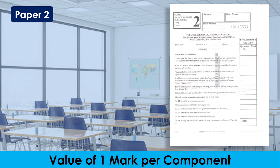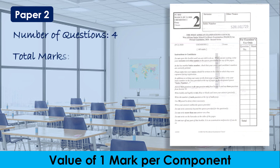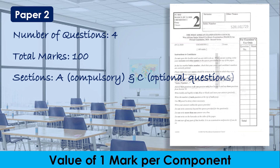The essay consists of four questions made up of 100 marks, with each question carrying 25 marks. The paper has two sections: Section A and Section C for Nigerian, Sierra Leonean, and Liberian candidates — Section A is compulsory while you're expected to answer only three out of four questions in Section C. Section B is for Ghanaian candidates.